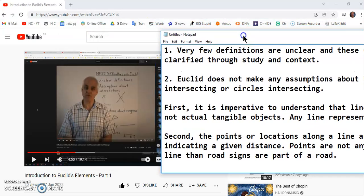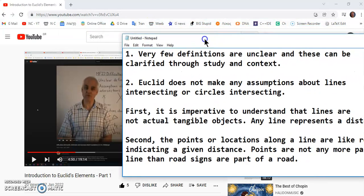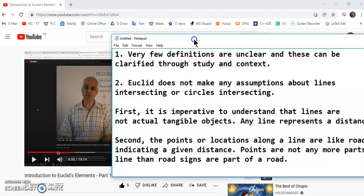And then Wilberger claims that Euclid does not make any assumption about lines intersecting or circles intersecting. That's absolutely false because there are no assumptions.